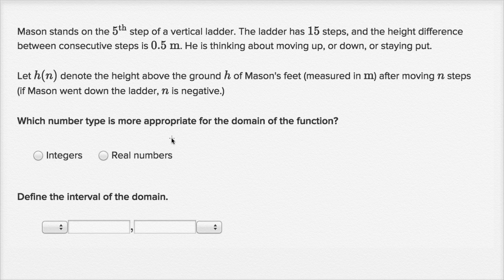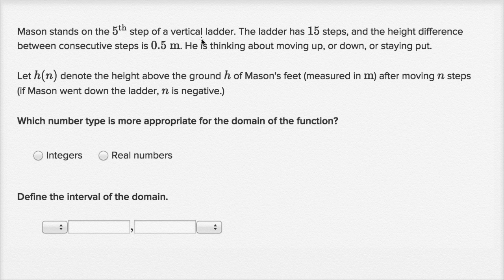This right over here is a screenshot from a Khan Academy exercise. It says Mason stands on the fifth step of a vertical ladder. The ladder has 15 steps, and the height difference between consecutive steps is 0.5 meters. He's thinking about moving up, down, or staying put.